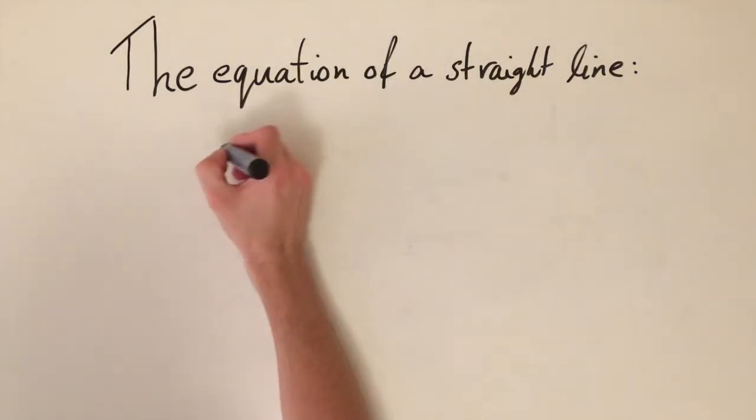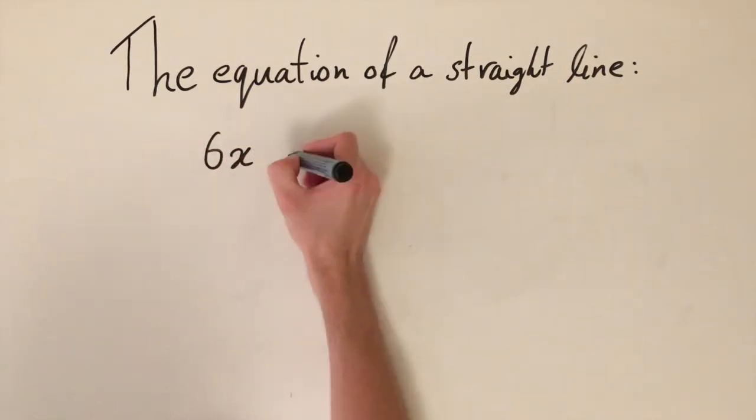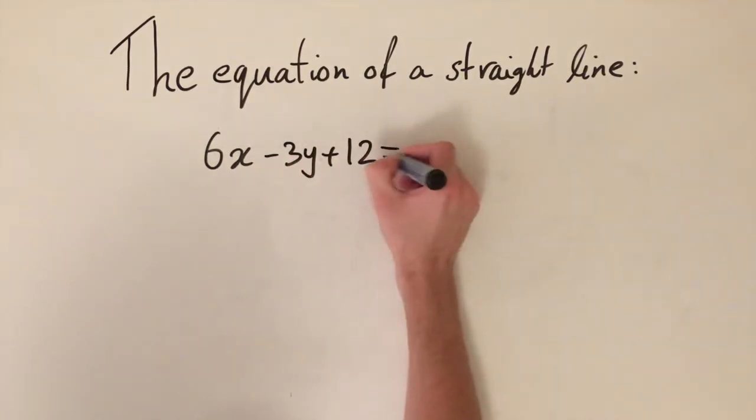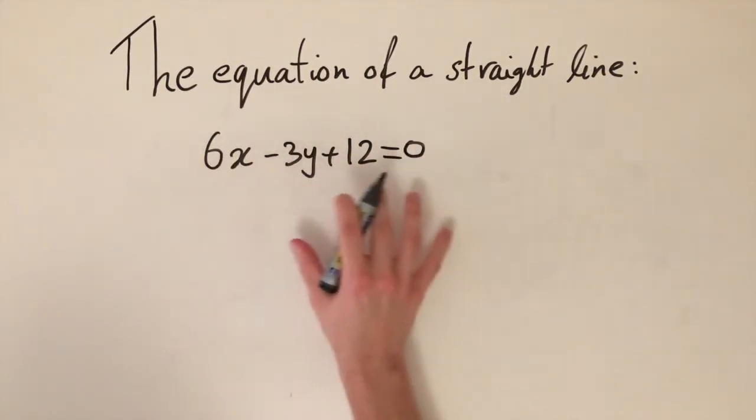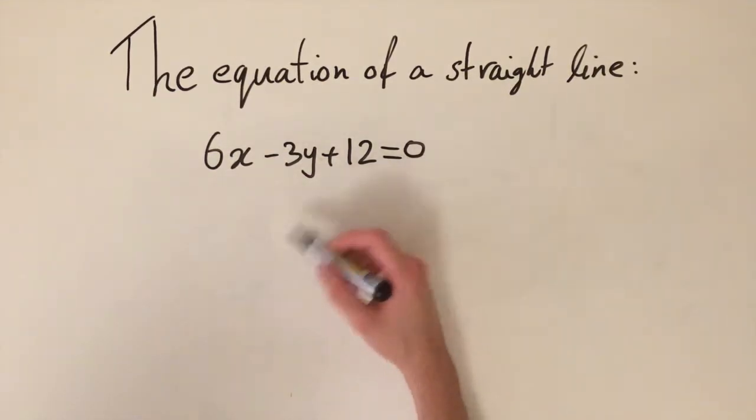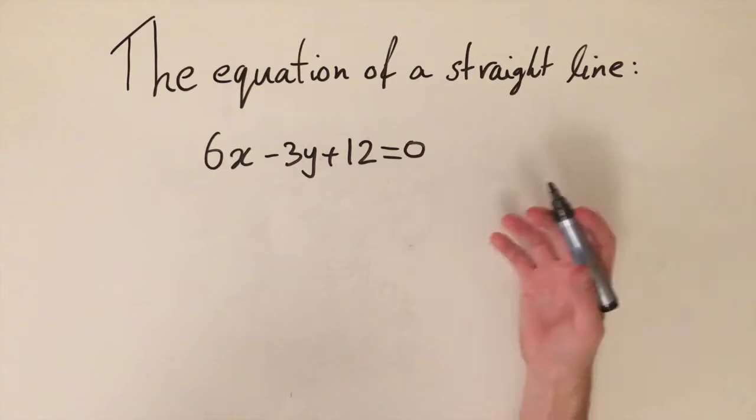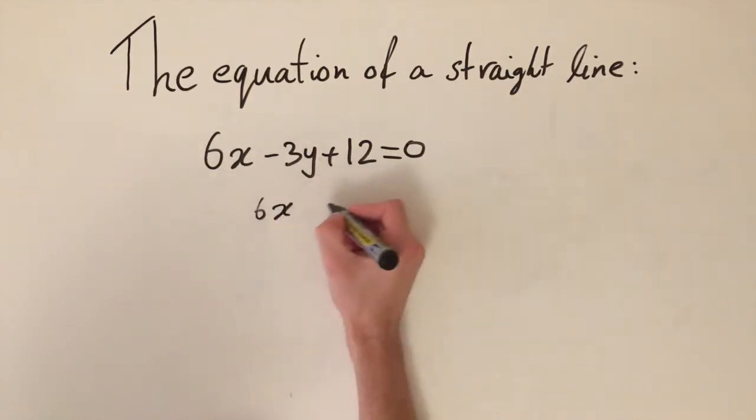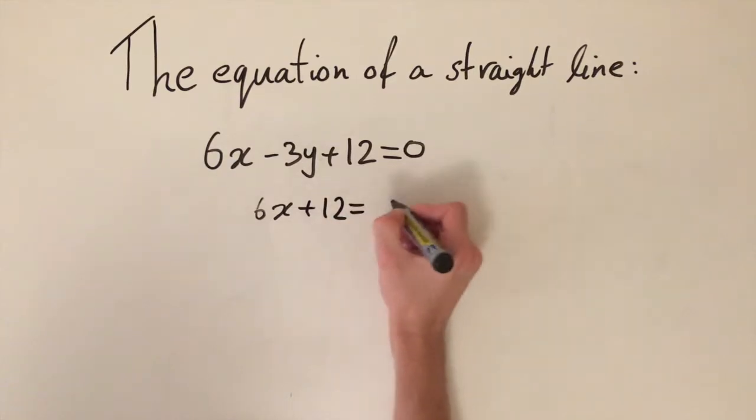Okay, let's do one more example and this is going to be in the other form. So we're going to have 6x minus 3y plus 12 is equal to zero. So we've got all the variables and constants on one side, and we want to first off rearrange to get it into a y equals mx plus c form. So let's just move the y onto the right-hand side and we'll get 6x plus 12 is equal to 3y.